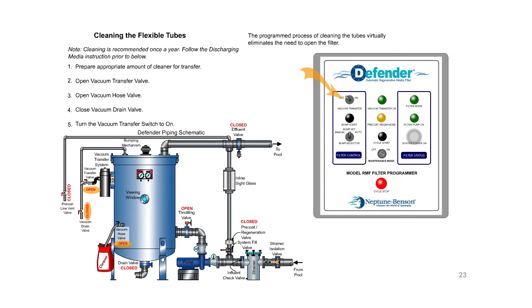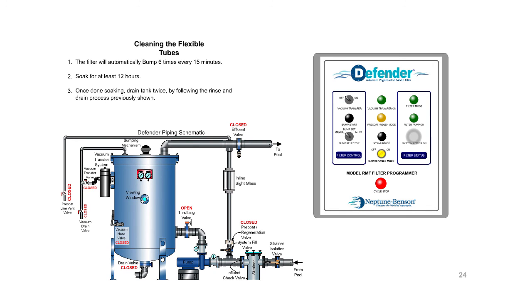Once you are done vacuuming in the cleaner, turn the vacuum transfer switch to off. Close vacuum hose valve and vacuum transfer valve. The filter will automatically bump 6 times every 15 minutes. Soak for at least 12 hours. Once done soaking, drain tank twice by following the rinse and drain process previously shown.